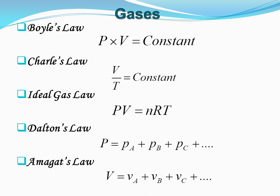Next is Charles' law. According to Charles' law, for a given mass of an ideal gas, the ratio of the volume to temperature is constant at a given pressure. That is, V / T = constant. On combining these two laws, we get the expression for the ideal gas law as PV = nRT, where R is the universal gas constant and n is the number of moles.